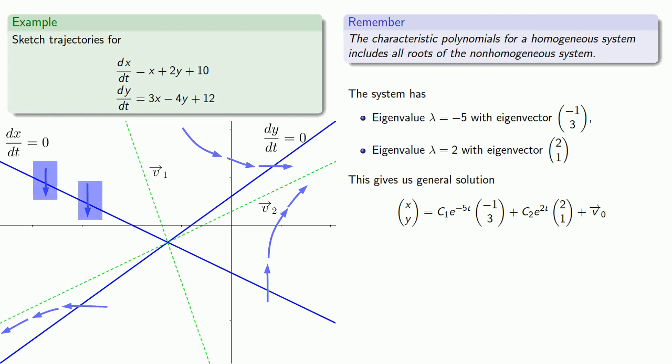So the trajectory starting here will move downwards, but then they'll run parallel towards the second eigenvector, so they may look something like this. The trajectory that starts near this isocline will move to the right, but as t goes to infinity, it will become more and more parallel to the eigenvector v2. And so it may look something like this.